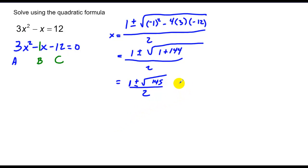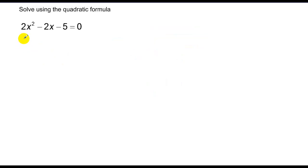And if this final radical form reduces, we want to reduce that, but 145 has no perfect squares in it, so this problem is going to be done.